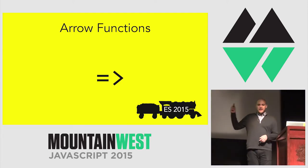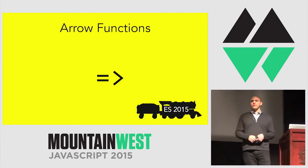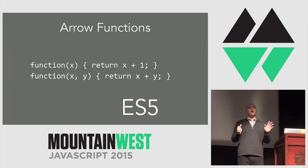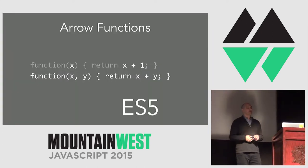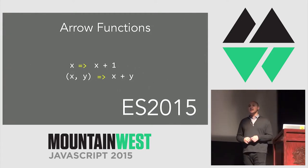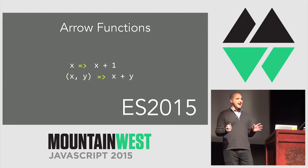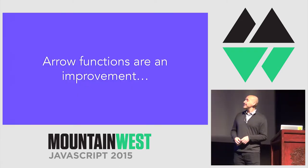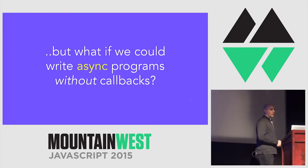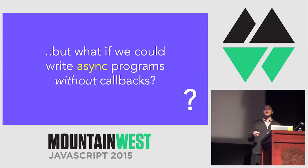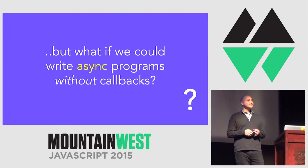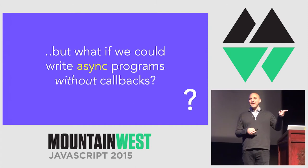In ES2015, or formerly known as ES6, we introduced arrow functions. Arrow functions are a short way of writing a function — you can get rid of the boilerplate. That's all I have to say about that, it's pretty great. They're an improvement, but what if we could write async programs without callbacks at all? Imagine that for a second.